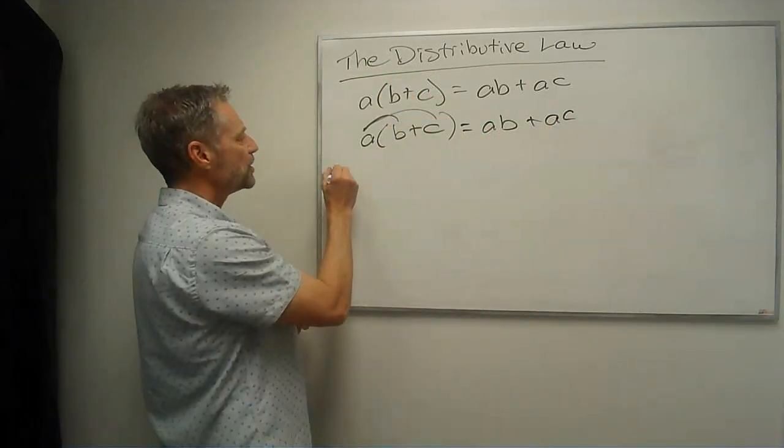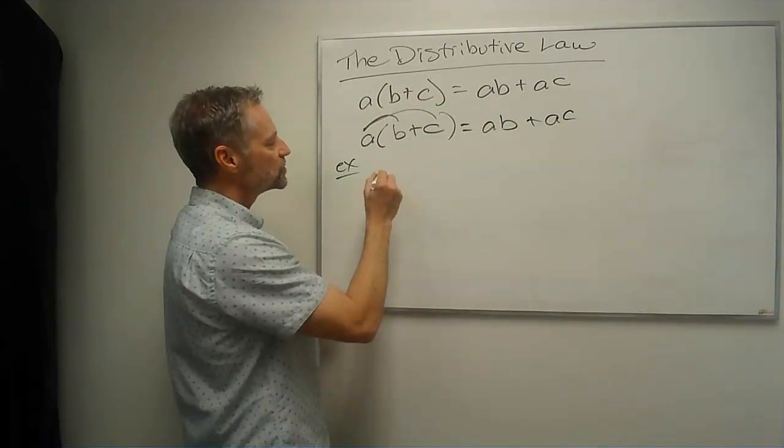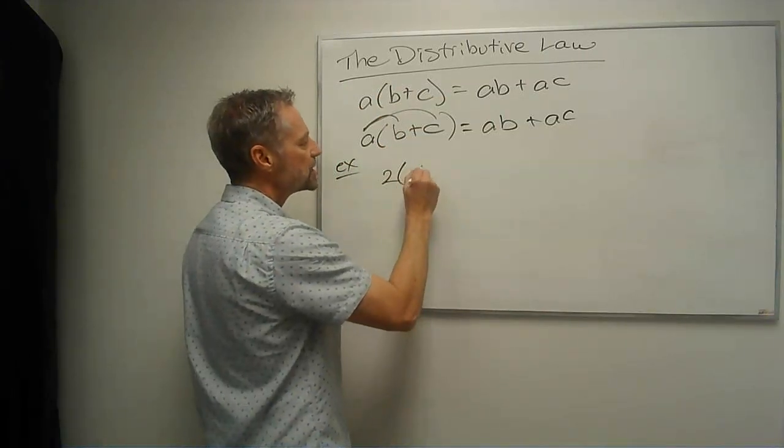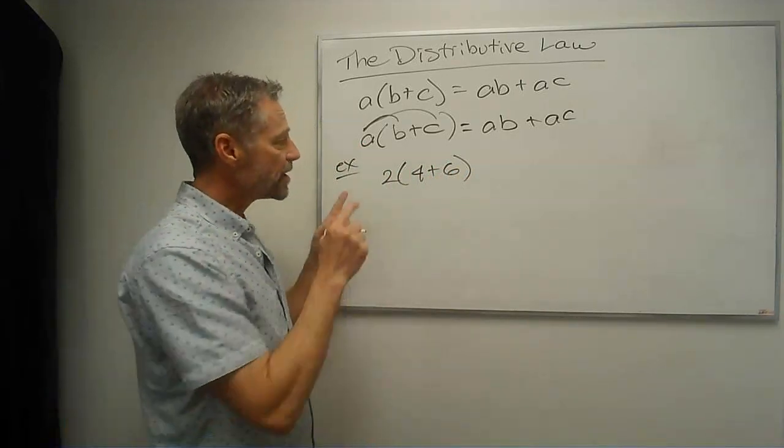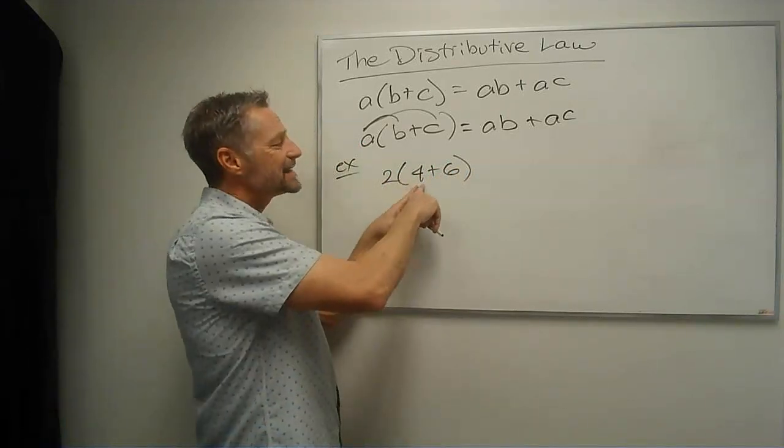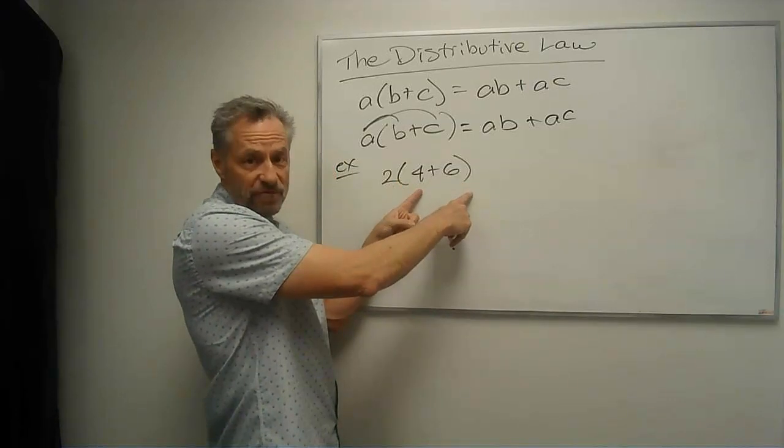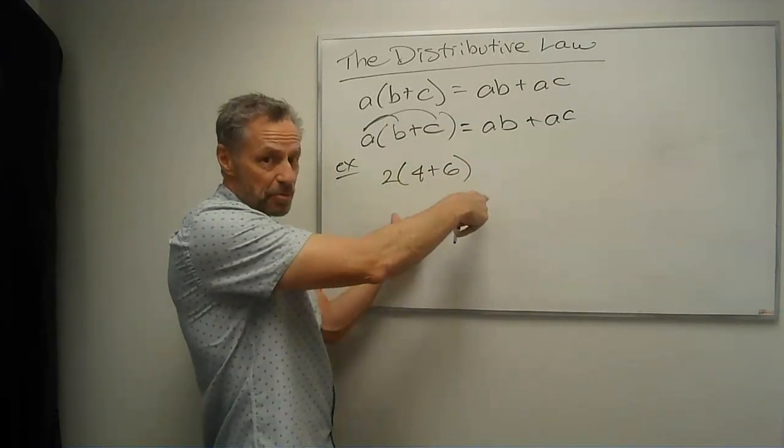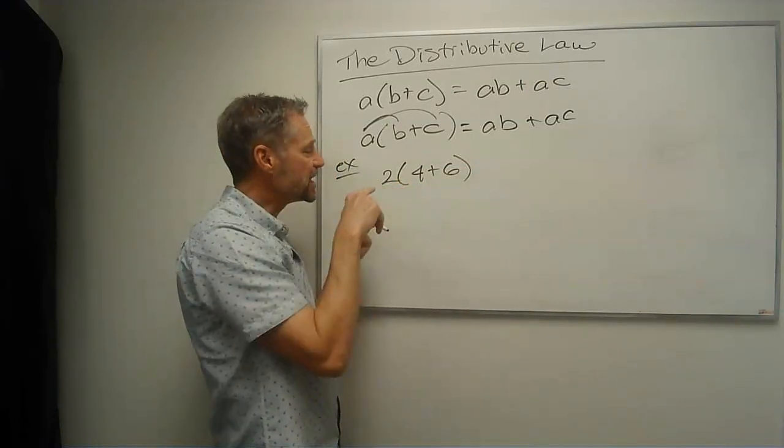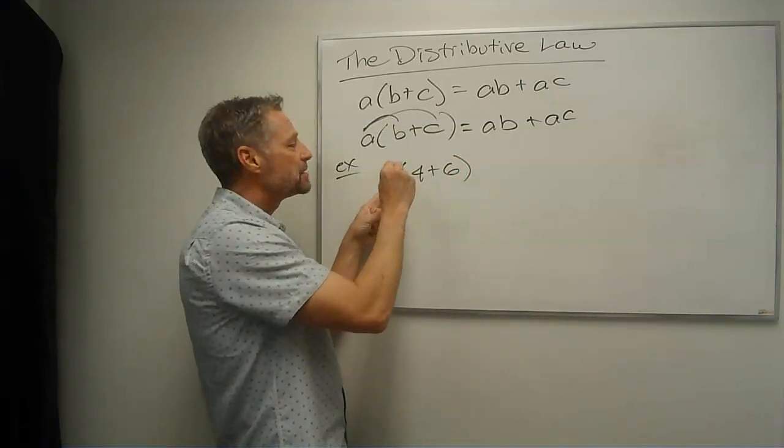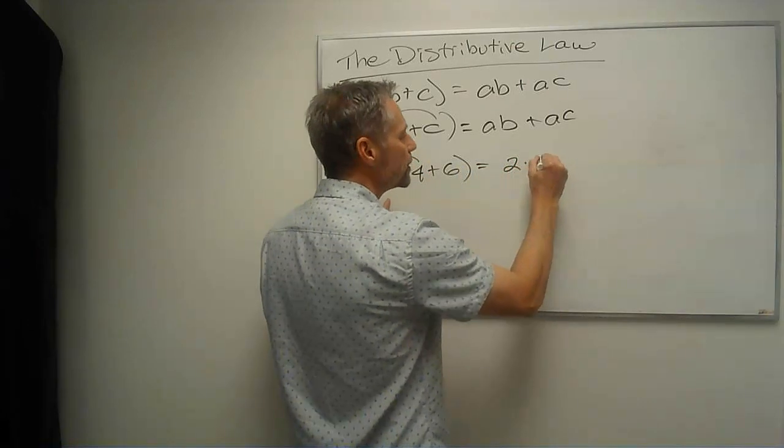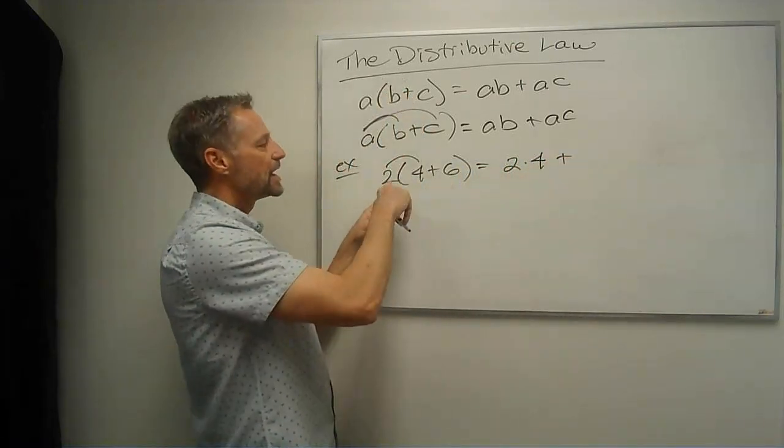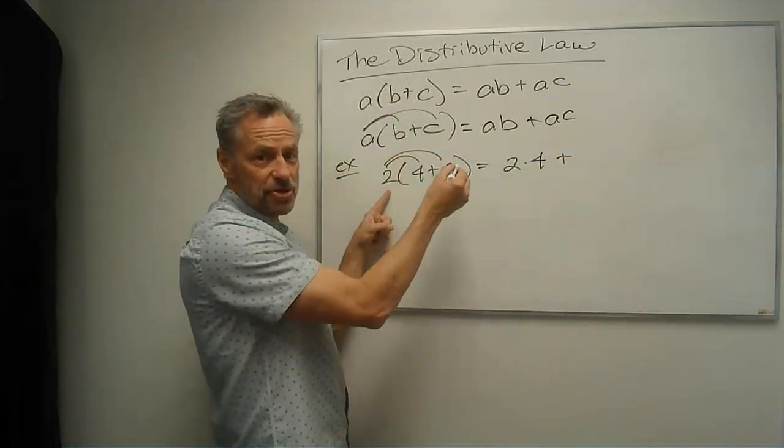So let's look at an example. Say we have 2 times 4 plus 6. The distributive law would say, oh, I can distribute, and instead of adding these first, that the order of operations would say to add because they're in the parentheses, which comes before multiplication, what I can do is I can multiply this in here. And so it's going to be 2 times 4 plus, and then 2 times 6.